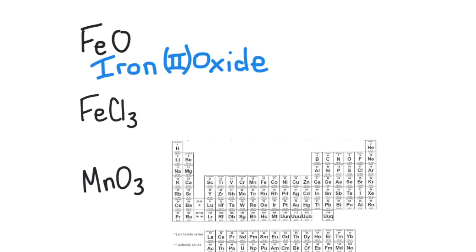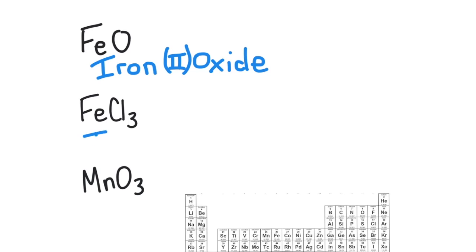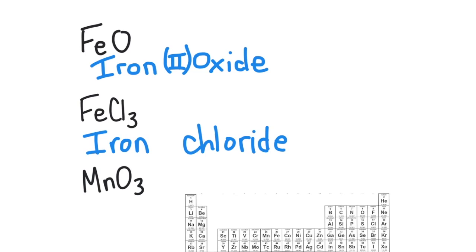Next is FeCl₃ — iron and chloride. Chlorine is in Group 7, so it has a −1 charge, and there are three of them, giving a total of −3. There's just one iron, so its charge must be +3 to balance. The name is iron(III) chloride. Notice that the charges on iron are different in these two compounds.